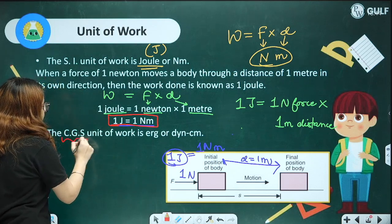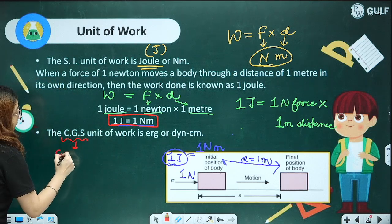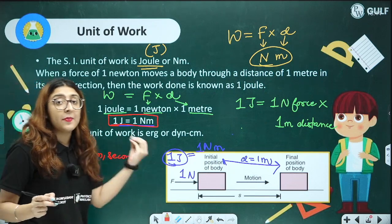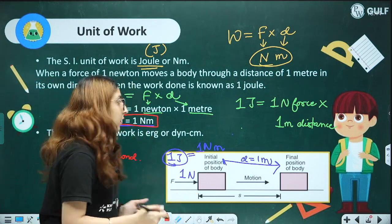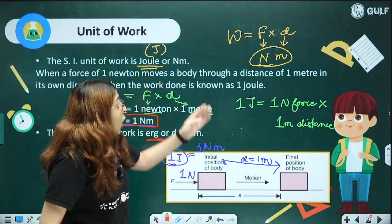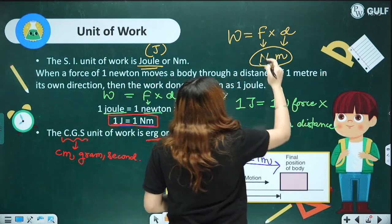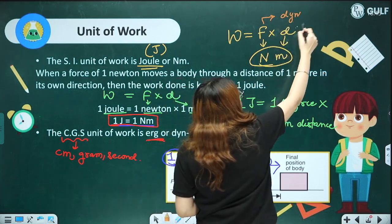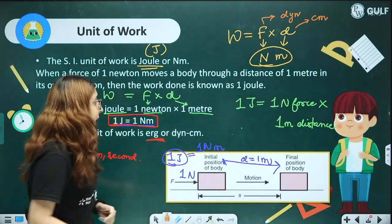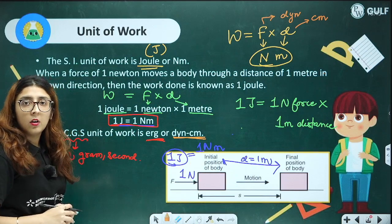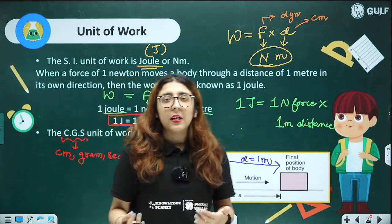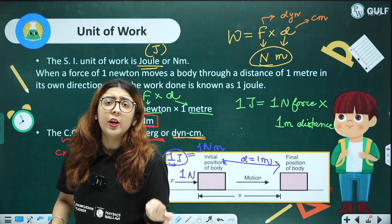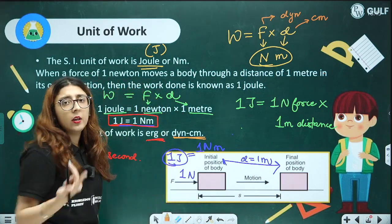Let us also talk about the CGS unit. CGS stands for centimeter gram second. The CGS unit of work is erg. From the formula, CGS unit of force is dyne and CGS unit of distance is centimeter, so from the formula you get dyne centimeter. One erg equals one dyne centimeter.